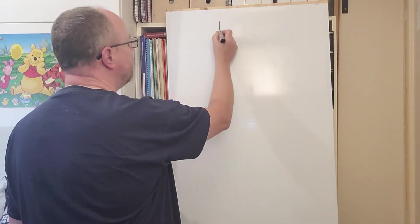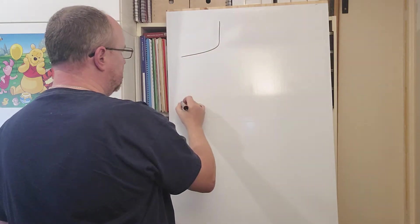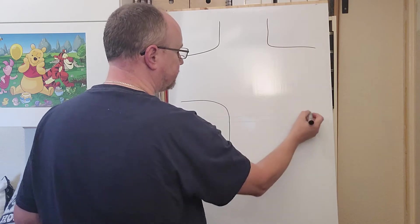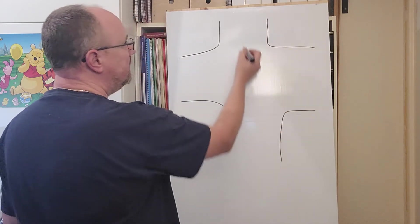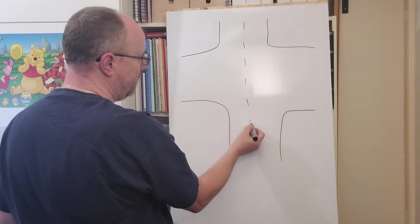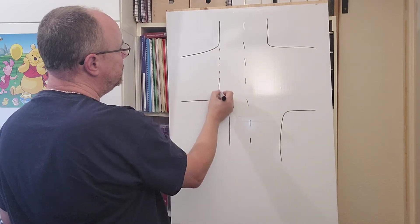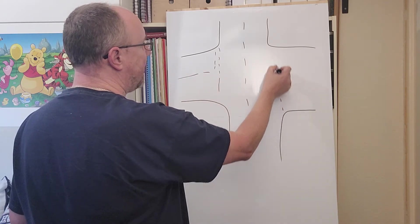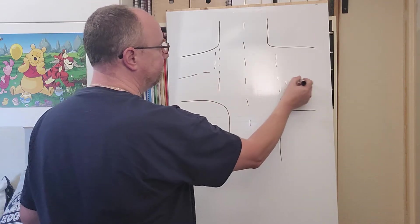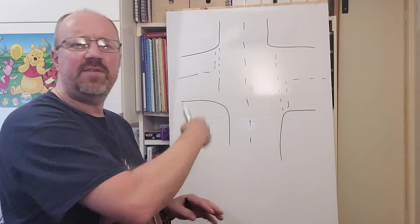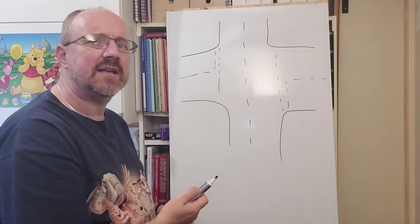So here we have some crossroads. Let's put in some road markings. Now this question is kind of assuming that you haven't got a give-way line. Although the same thing would apply even if you have got the give-way line, and we'll perhaps look at that towards the end of the video.